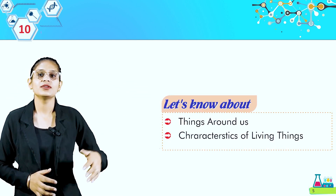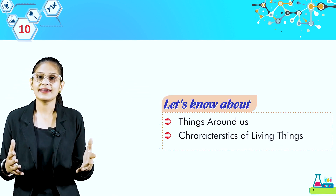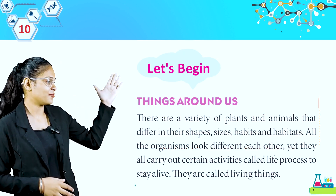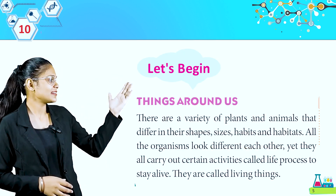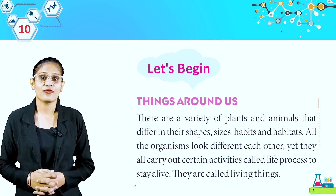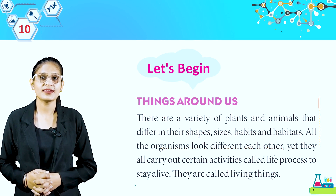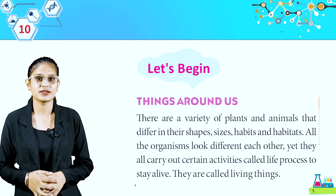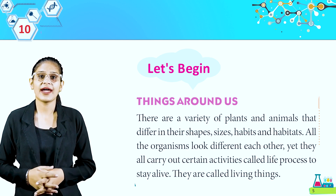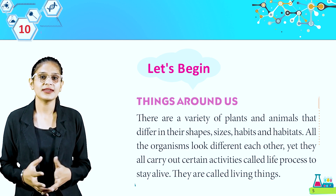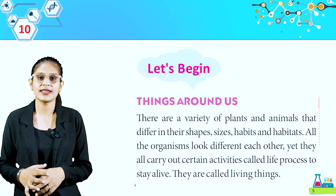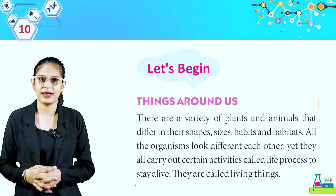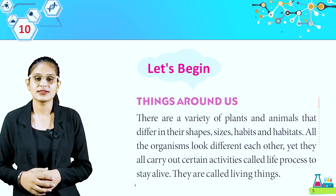Let's know about things around us. Characteristics of living things. There are a variety of plants and animals that differ in their shape, size, habits and habitats. All the organisms look different from each other, yet they all carry out certain activities called life processes to stay alive. They are called living things.